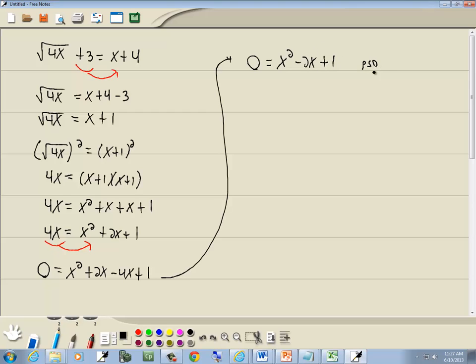And this is the PSD method. x squared, no number in front of our x squared. Take the number at the end and come up with our three columns. The only product that gives us 1 is 1 times 1. Add those together, 1 plus 1 is 2. Subtract them, 1 minus 1 is 0.